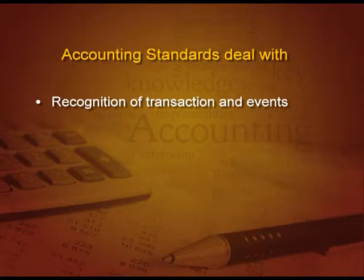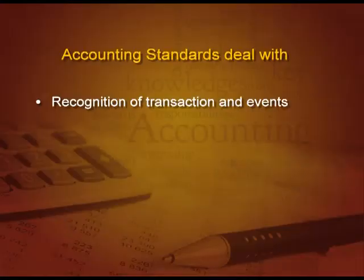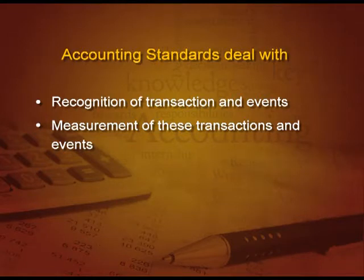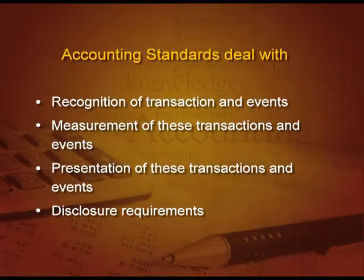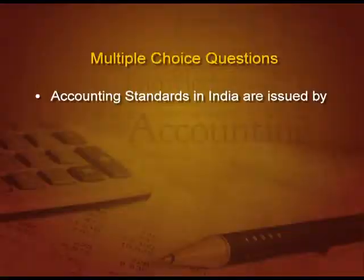First, they recognize the transactions and events which are to be recorded in the books of account. Then, measurement of these transactions and events — how do we measure them? Third, the presentation of these transactions and events — how they are to be presented in the books of account. And the last and very important one: disclosure requirement — what has to be disclosed in the books and how it has to be disclosed.